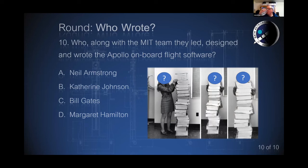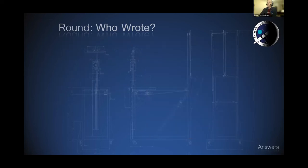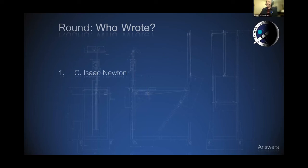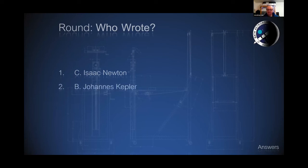Okay, are you all happy? Did you want to go back over any of them? The answers: who wrote Principia — it was Isaac Newton. Who wrote the book on planetary motions, having spent lots of time with Tycho Brahe — it was Johannes Kepler.